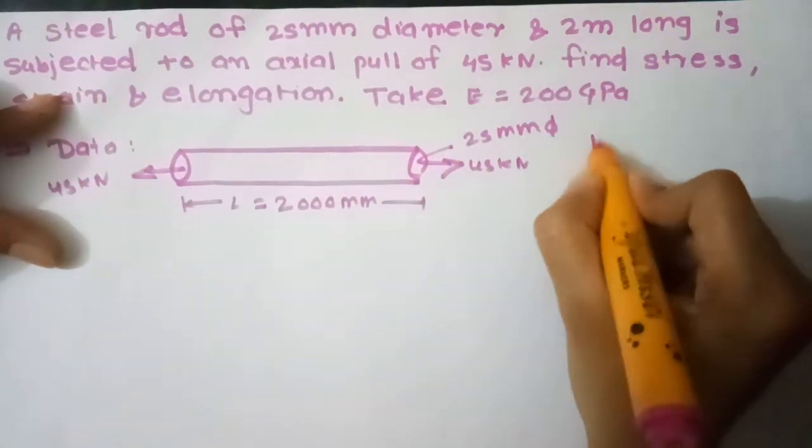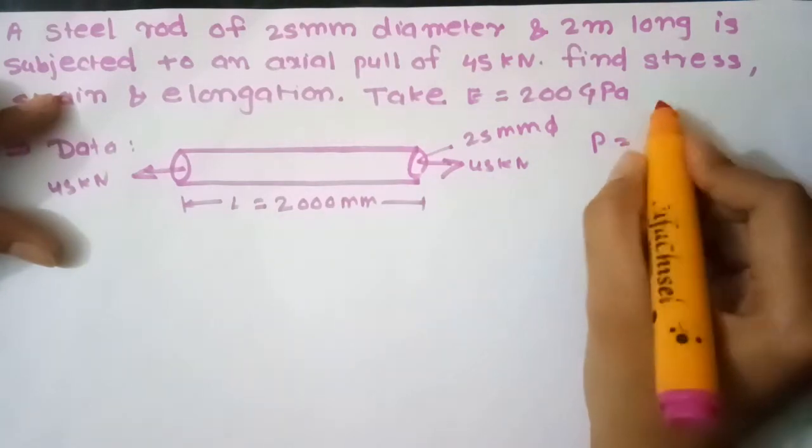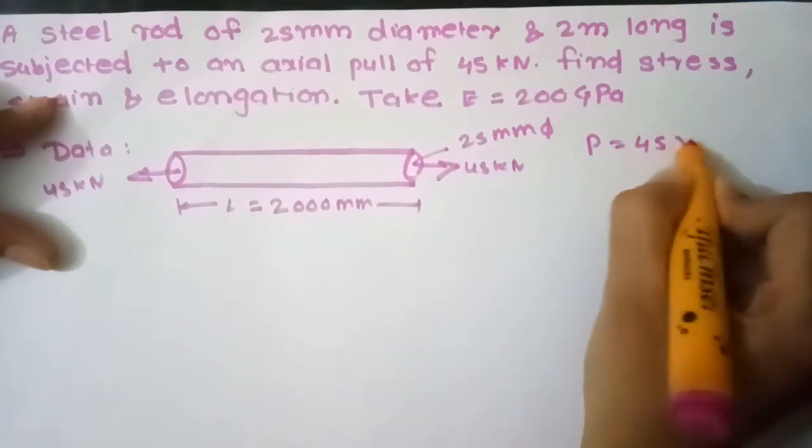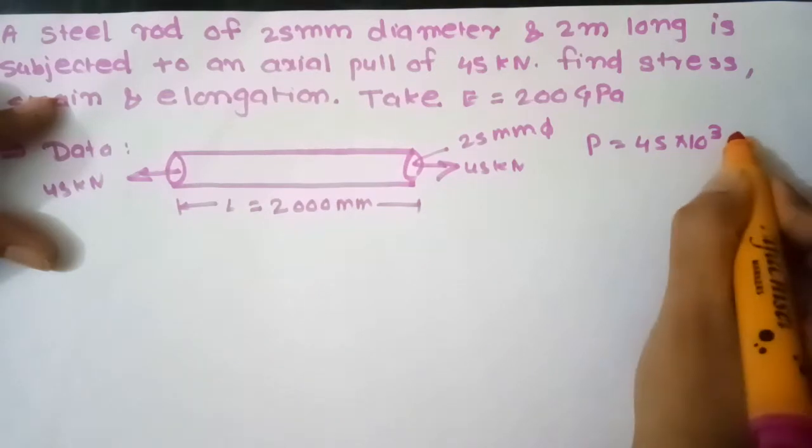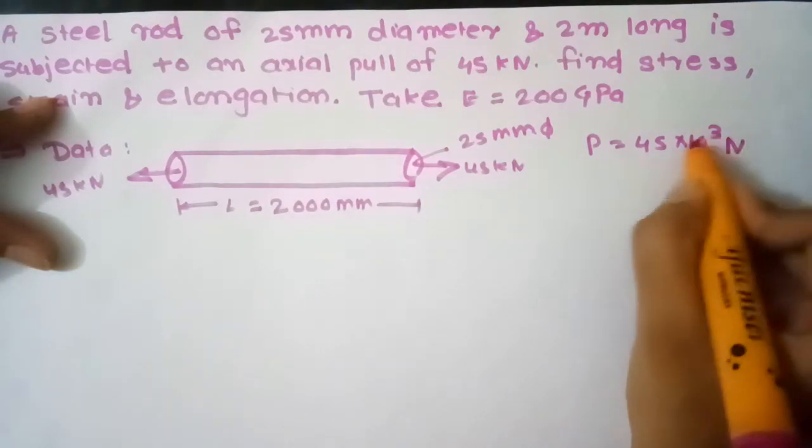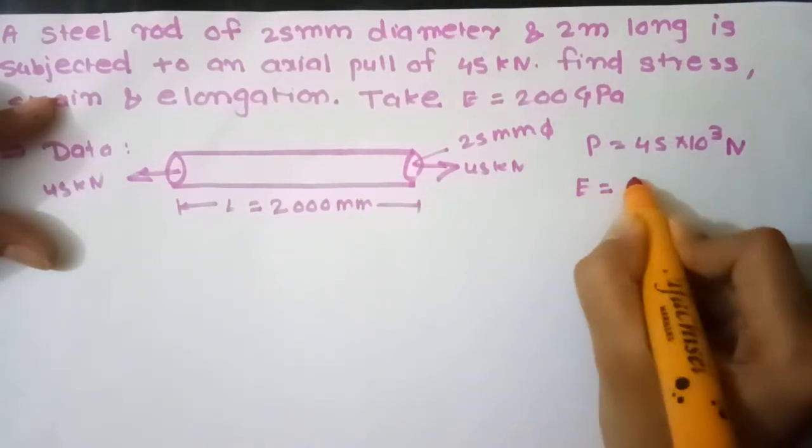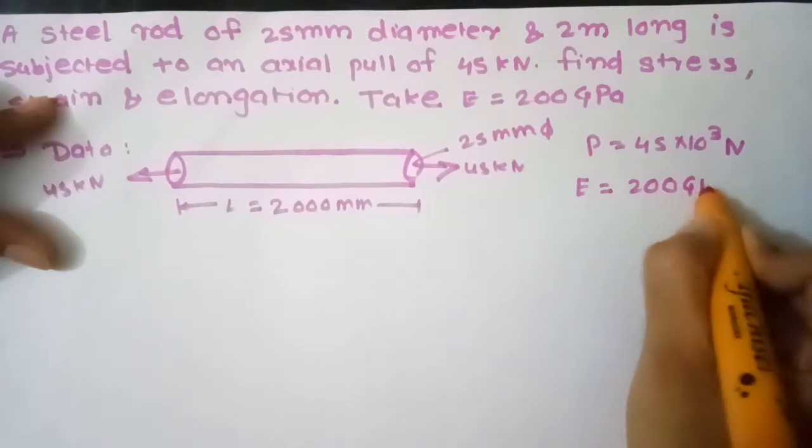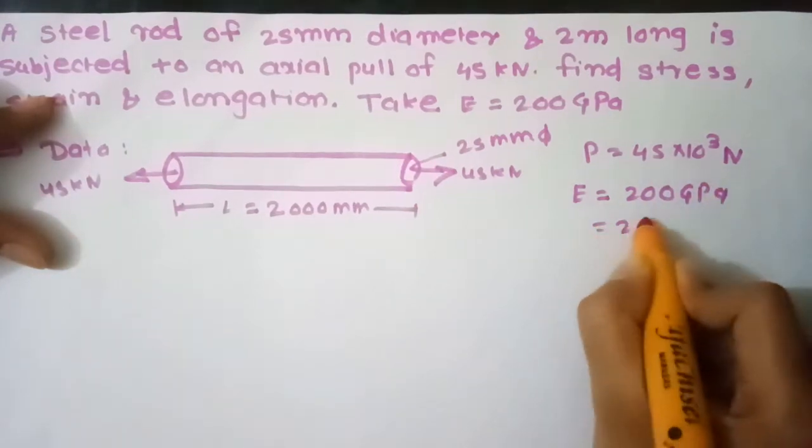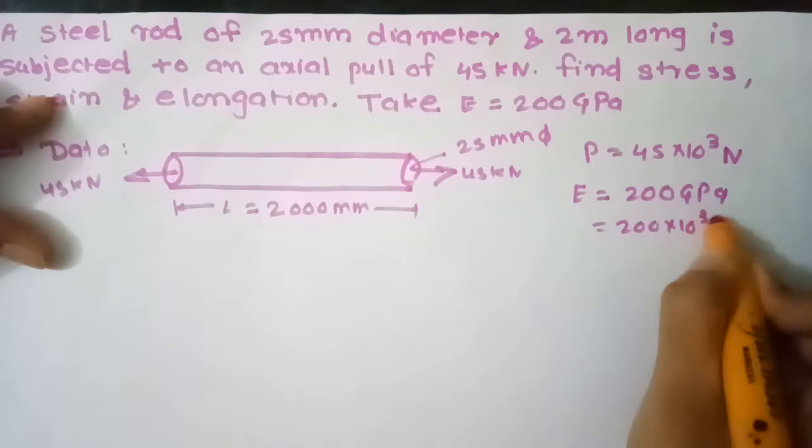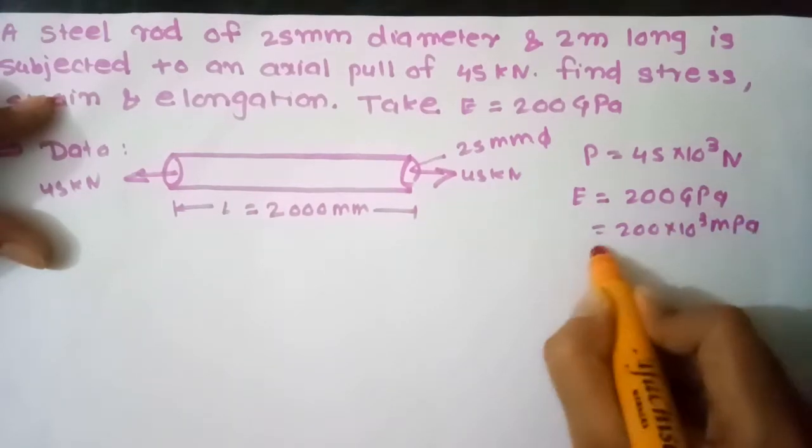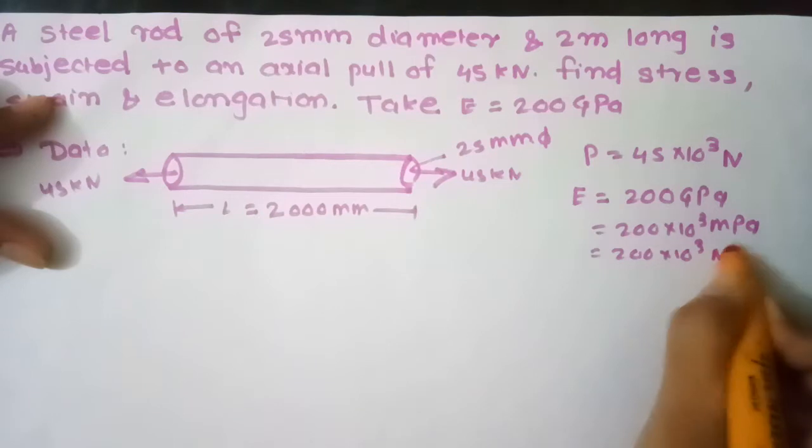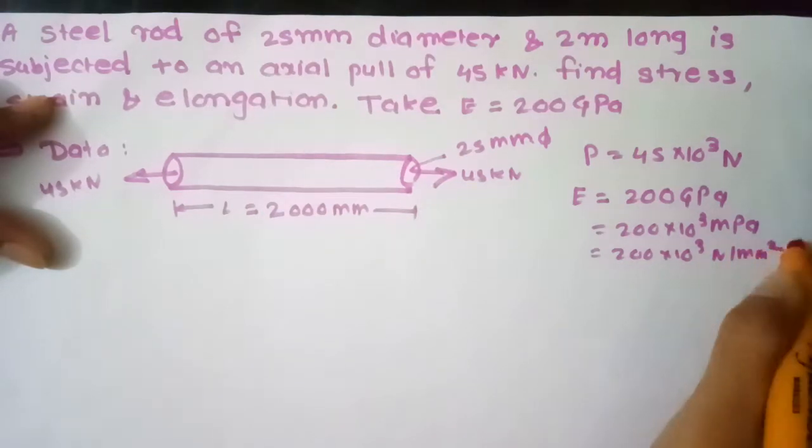That means P is equal to 45 into 10 raised to 3 N. E is equal to 200 GPa. That means 200 into 10 raised to 3 MPa, 200 into 10 raised to 3 N per mm square.